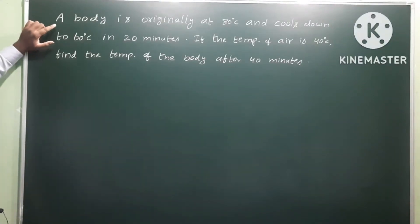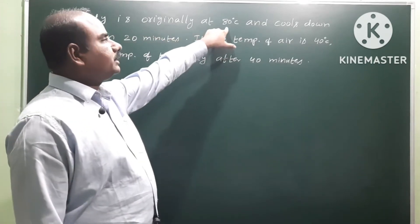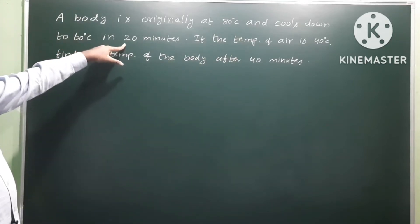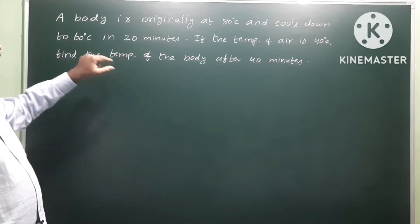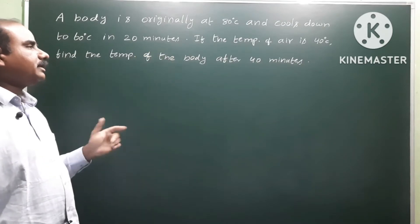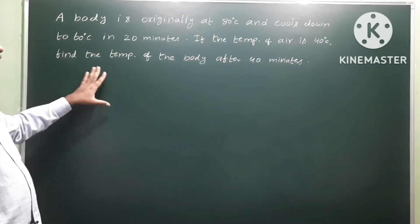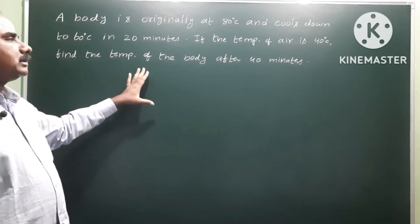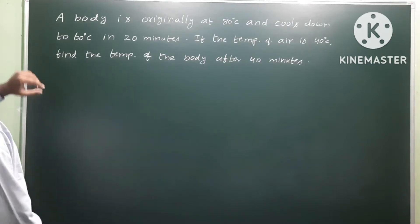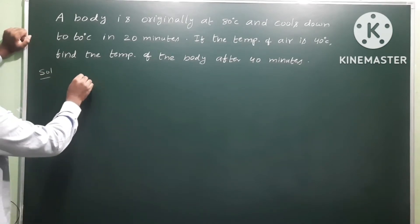Newton's Law of Cooling problem: A body is originally at 80 degrees centigrade and cools down to 60 degrees centigrade in 20 minutes. The temperature of the surrounding air medium is 40 degrees centigrade. Find the temperature of the body after 40 minutes.